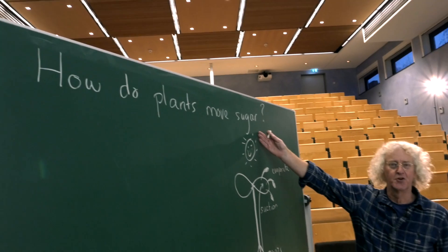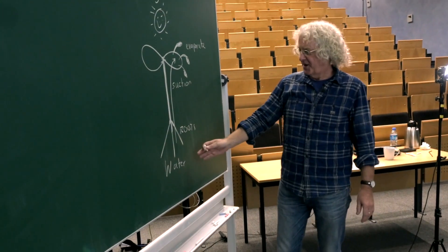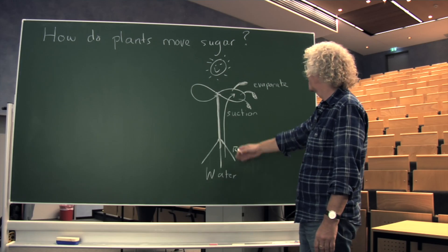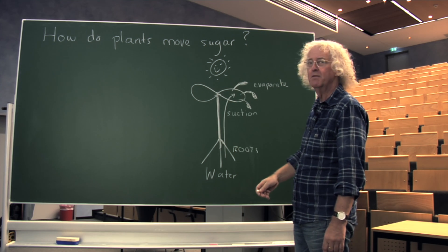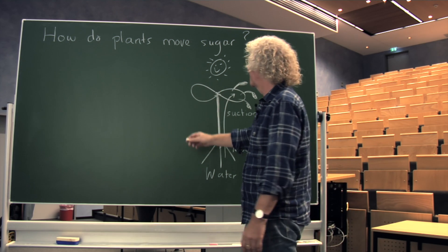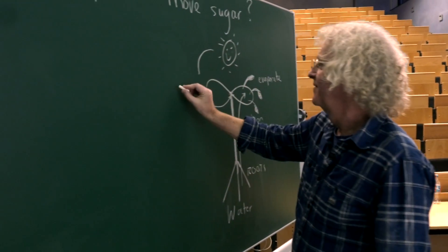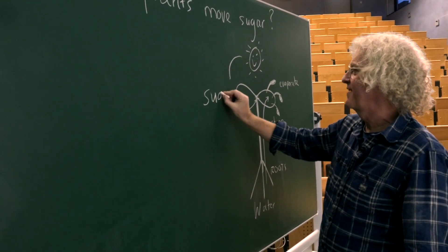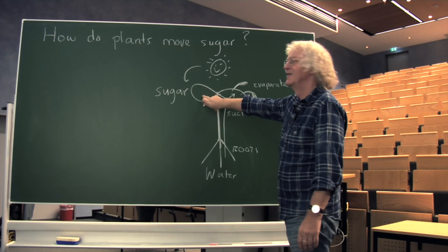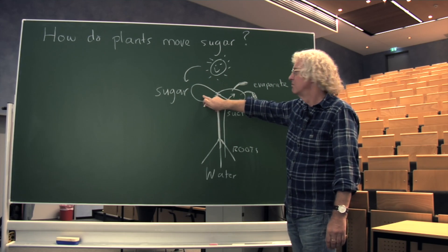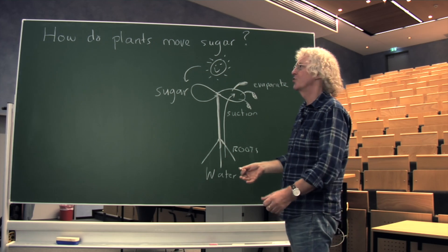How do plants move sugar? I explained in another video how they move water up to the leaves with suction using sun energy, but how do they move sugar? The sun energy allows them to carry out photosynthesis and sugar is made in the leaves. The rest of the plant needs the sugar.